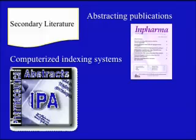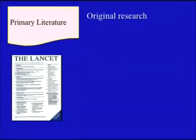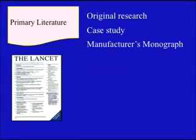Primary literature represents the most current resource for information and includes clinical trials, case studies, and other original research published in biomedical journals. Manufacturers' monographs fall into this category as they may have information not published elsewhere, such as toxicologic information. Primary literature provides details of methodology and scientific results that lead to therapeutic conclusions. Users are therefore able to critically evaluate the research to determine whether the conclusions are sound and based on the work presented.